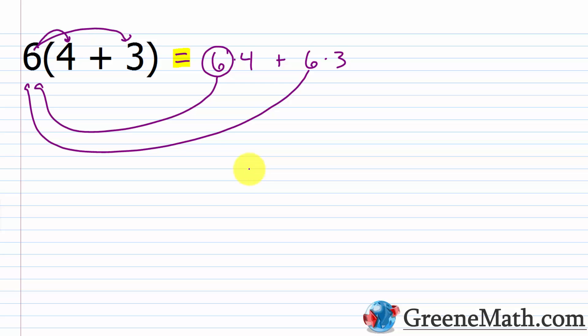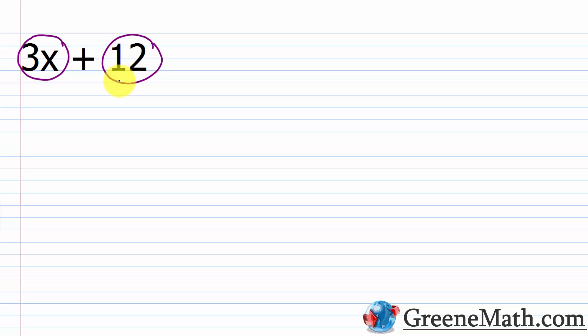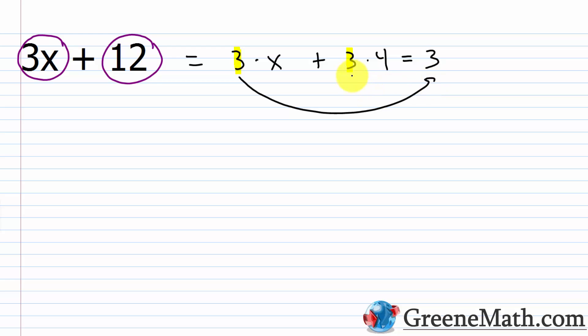This might seem easy because we only have numbers, but let's suppose we looked at something like 3x plus 12. How could I write this sum as a product? Essentially, I want to first find the GCF. The GCF for 3x and 12: 3 doesn't factor further, and 12 is 2 times 2 times 3. So I can write this as 3 times x plus 3 times 4, then pull the 3 out in front of parentheses, leaving x plus 4 inside.